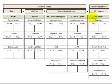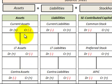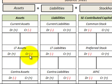Let's zoom in to see what we're talking about. Under assets I have current assets, long-term assets, and contra assets. There's a little T-account set up for each of these so you know where to put your debits and credits. Debits are shown as a plus under current assets, credits as a minus. Long-term assets: same — debits plus, credits minus. Contra assets: debits minus, credits plus.